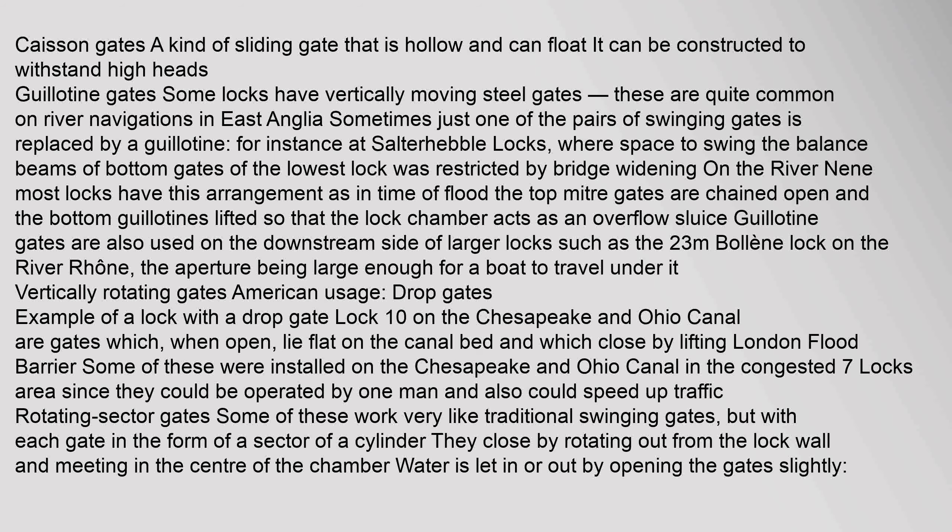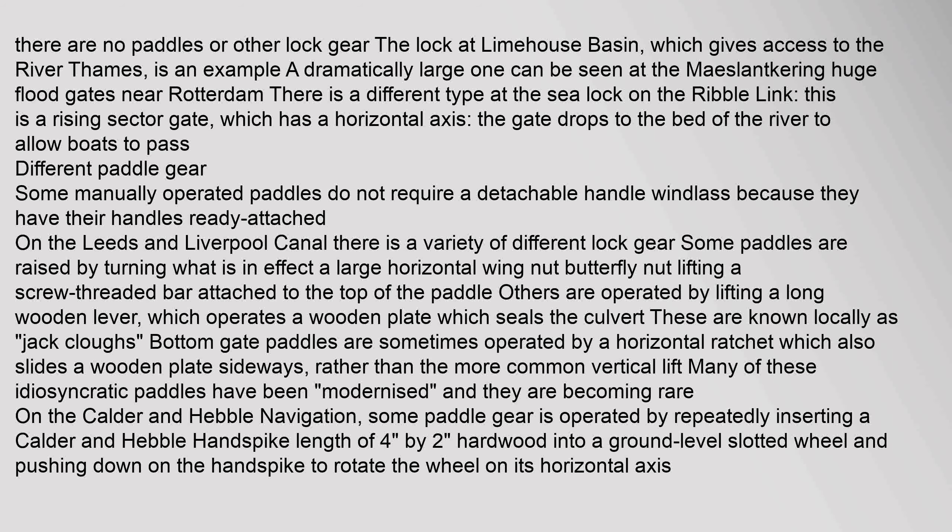Drop gates, or vertically rotating gates, lie flat on the canal bed when open and close by lifting. Some were installed on the Chesapeake and Ohio Canal in the congested Seven Locks area, as they could be operated by one man and speed up traffic. Rotating sector gates work like traditional swinging gates, but each gate is in the form of a sector of a cylinder; they close by rotating out from the lock wall and meeting in the center of the chamber, with water led in or out by opening the gates slightly — no paddles or other lock gear required. The lock at Limehouse Basin giving access to the River Thames is an example.